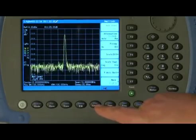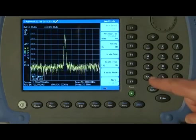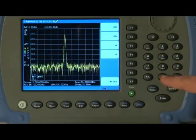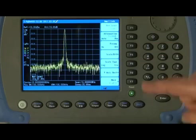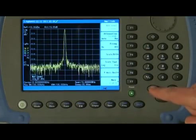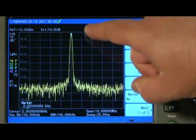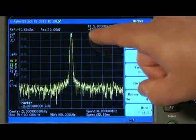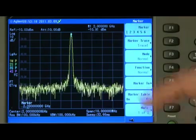Then press the amplitude button, and we will set the reference level to minus 10 dBm. If you want to measure the amplitude and frequency of that signal, just press the marker button, and you can see here marker 1 is at 2GHz, and the amplitude is about minus 10 dBm.